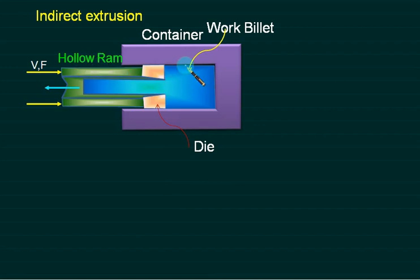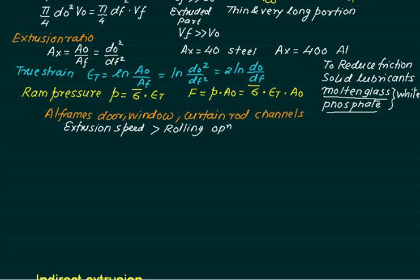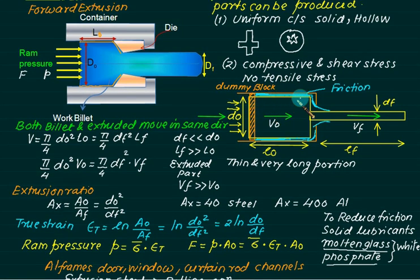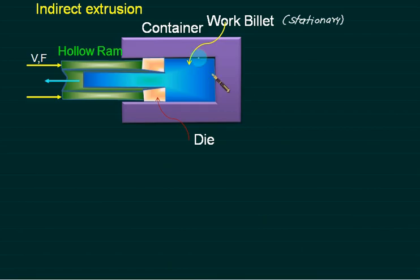In the case of indirect extrusion, this is your billet and this time the billet is stationary. In previous case, your billet was moving and therefore your friction problem. In this case there is no friction. In forward extrusion, this part is moving continuously. Container is stationary, billet is moving. Whenever we have relative motion, there is friction. In this case, the container and billet are fixed, so there is no friction over this one.